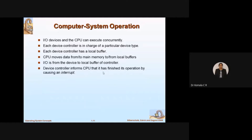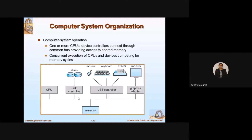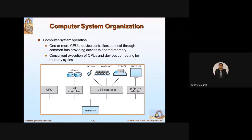The device controller informs the CPU that it has finished its operation by causing an interrupt. When the job is completed — for example, after transferring data from memory to buffer and then from buffer to disk — the disk controller sends an interrupt to the CPU saying the data transfer is complete. This intimation is given to the CPU so that the CPU is freed from this job and can be utilized for some other task.